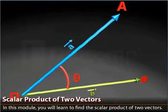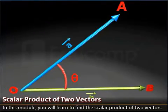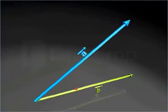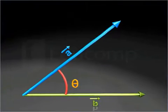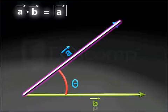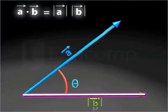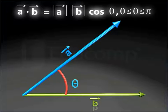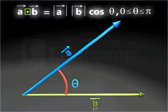Scalar Product of Two Vectors. In this module, you will learn to find the scalar product of two vectors. The scalar product of non-zero vectors A and B is defined as the product of magnitudes of vector A, vector B, and cosine of the smaller angle between them. The dot is the operation symbol for the scalar product.